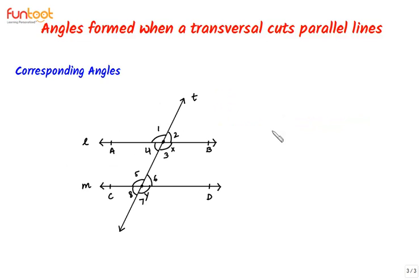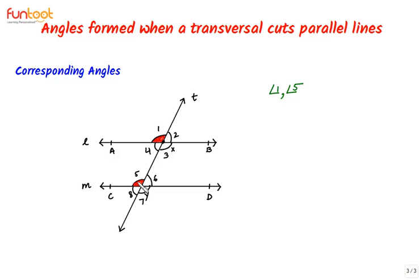Corresponding angles refer to angles in matching corners. If we pick angle 1 from the first intersection point, then the angle in its matching corner is angle 5. Angles 1 and 5 are both towards the left side of the transversal, and both are towards the upper side of the given pair of lines — angle 1 is on the upper side of L and angle 5 is on the upper side of M. That is why angles 1 and 5 are in the matching corners, or they are corresponding angles.